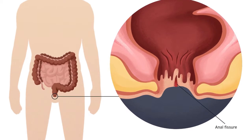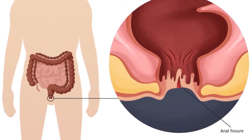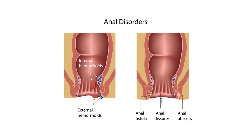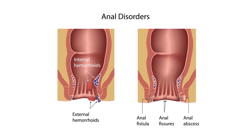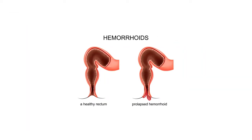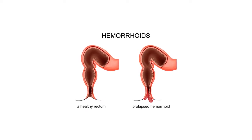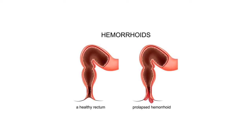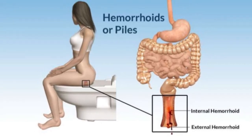Many physicians use a grading system to categorize hemorrhoids along four stages. First-degree hemorrhoids bleed but do not prolapse — they are slightly enlarged but do not protrude outside the anus. Second-degree hemorrhoids prolapse and retract on their own, with or without bleeding; they may come out of the anus during activities like passing stool and then return inside the body.